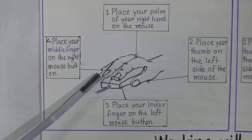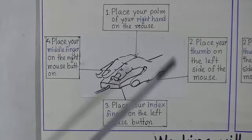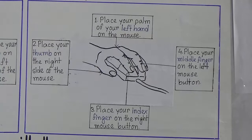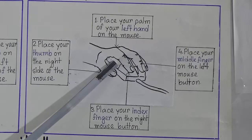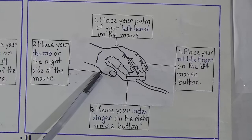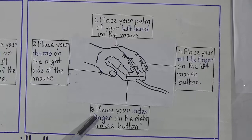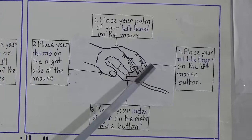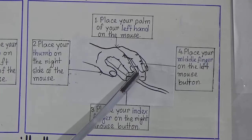If you are left-handed, follow the opposite way as shown in the picture. Place the palm of your left hand on the mouse. Next, place your thumb on the right side of the mouse. Then place your index finger on the right mouse button. The last step is to place your middle finger on the left mouse button.